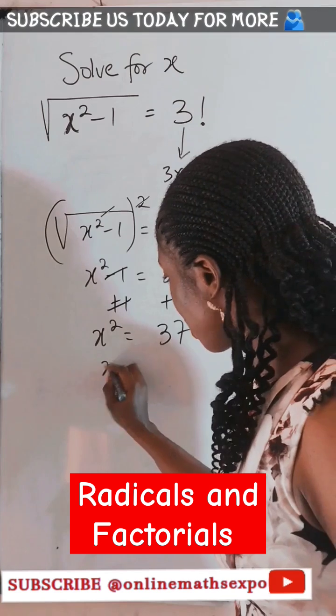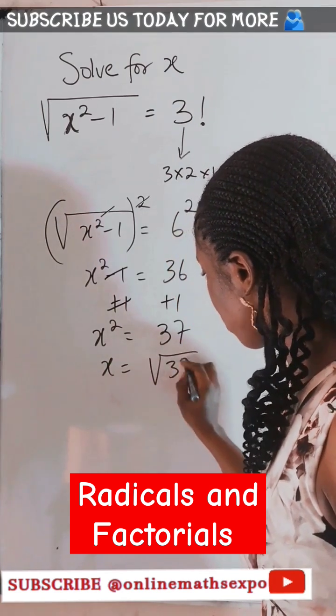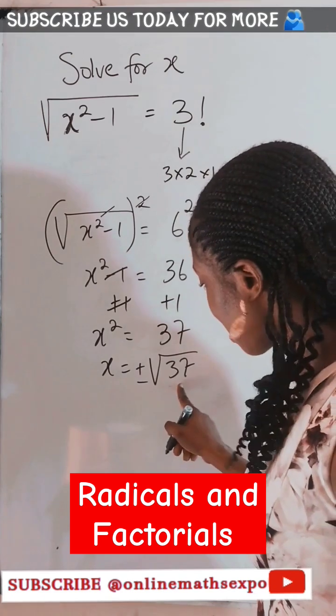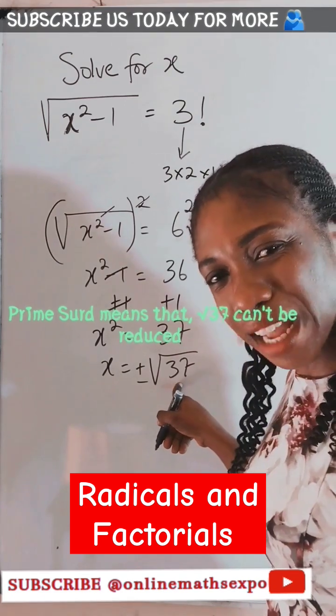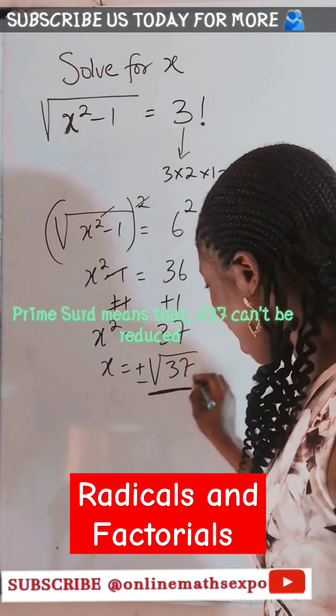To find x, you take the square root of this 37, both the positive and negative value. 37 root of it is a prime, so this is the answer.